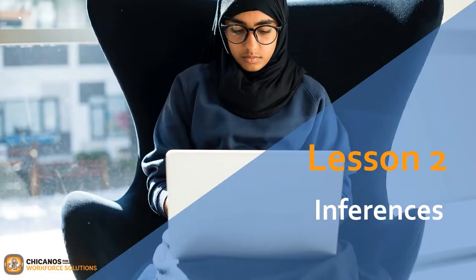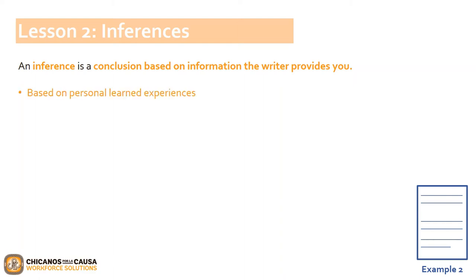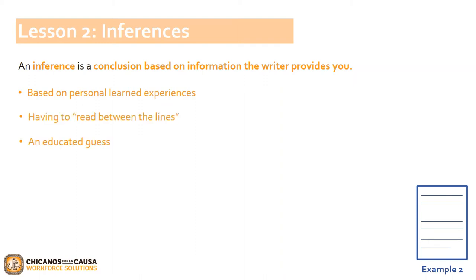Welcome back. We're now moving on to Lesson 2, Inferences. To understand a story, you can't just rely on what is directly stated. You also need to make inferences. An inference is a conclusion based on information the writer provides you. This can be based on personal learned experiences, having to read between the lines, or an educated guess. Essentially, making inferences means taking a closer look at the details based on information you are given in a story, and using your knowledge of the real world.